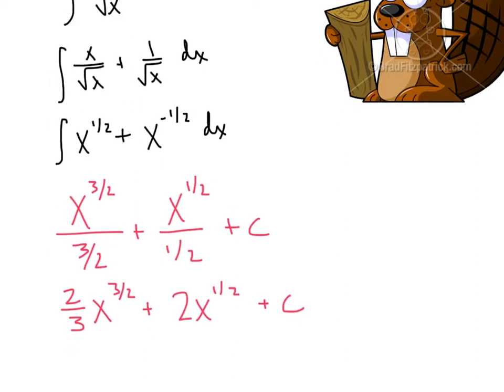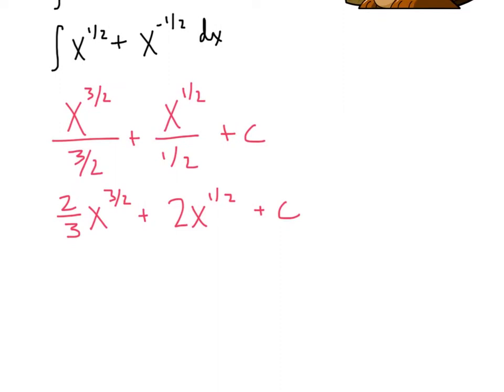And if they wanted to be fussy and they wanted me to rewrite it in radical form, we could say, let's see, 2 square root of x cubed all divided by 3 plus 2 radical x plus c. And there's a beautiful answer.